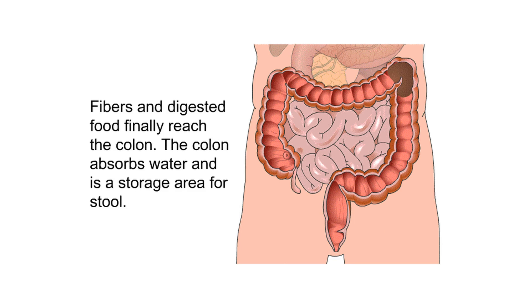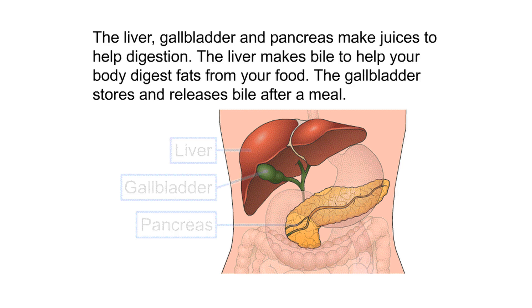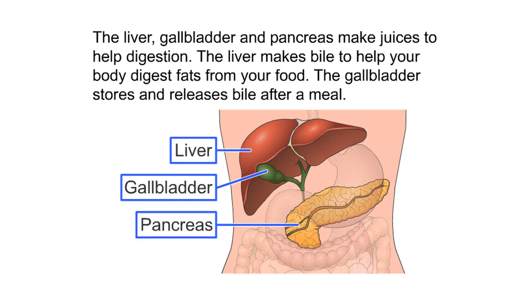The colon absorbs water and is a storage area for stool. The liver, gallbladder, and pancreas make juices to help digestion. The liver makes bile to help your body digest fats from your food. The gallbladder stores and releases bile after a meal.